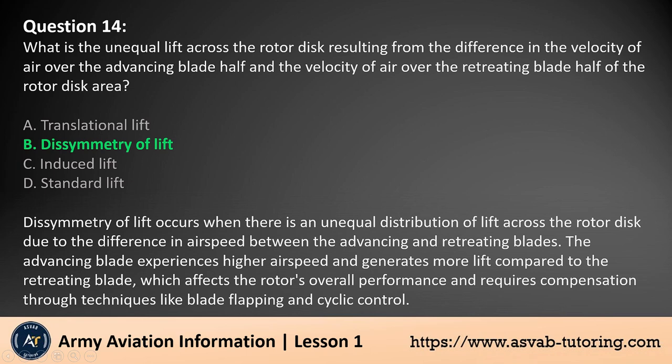Dissymmetry of lift occurs when there is an unequal distribution of lift across the rotor disc due to the difference in airspeed between the advancing and retreating blades. The advancing blade experiences higher airspeed and generates more lift compared to the retreating blade, which affects the rotor's overall performance and requires compensation through techniques like blade flapping and cyclic control.